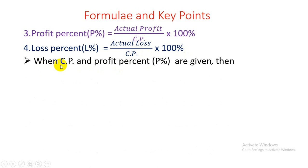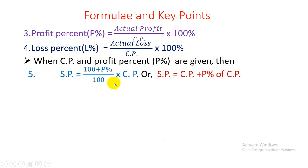When CP and profit percent (P%) are given, then SP = [(100 + P%) / 100] × CP, or SP = CP + P% of CP.